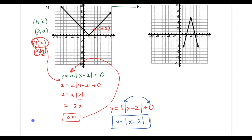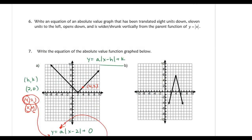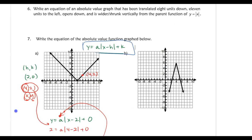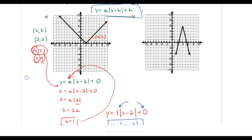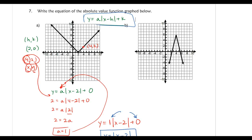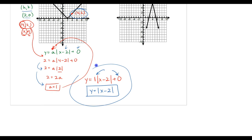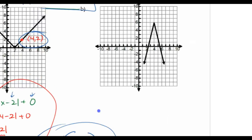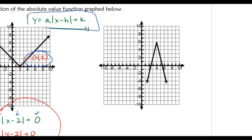Now I can plug that back into the original equation. So y equals the absolute value of one times x minus two plus zero. There are two redundant things here — I don't really need the one in front because it's not stretching or shrinking, and I don't need the zero. So this equation is actually the absolute value of x minus two. To recap: start with the general form y equals a times the absolute value of x minus h plus k, plug in the vertex for h and k, then pick any x-y pair from the graph to solve for a. Then plug a back in and simplify.